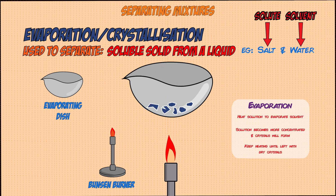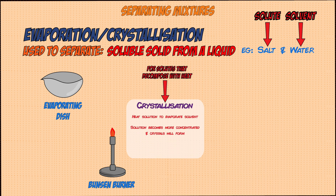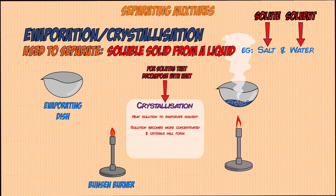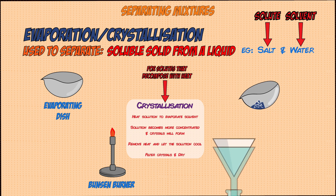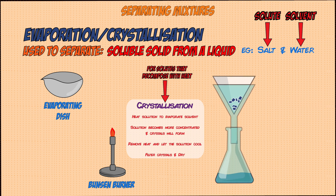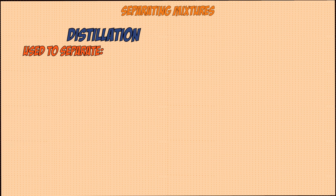Eventually crystals will start forming and you can carry on heating until all the solvent has evaporated, leaving dry crystals. However, for some solutions the solid will start to decompose if heated, so evaporation won't work. Instead, crystallization is used — you heat the solution until crystals start to form, then remove the heat and let the solution cool. This causes more crystals to form, as the solid becomes insoluble in a cold, highly concentrated solution. You then filter out the crystals and leave them to dry.